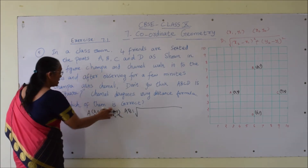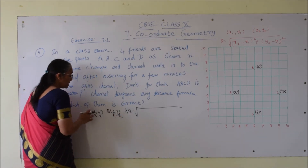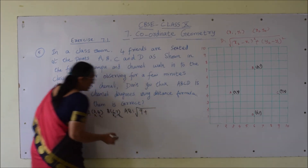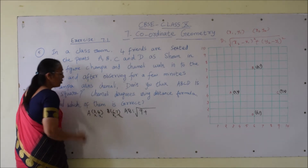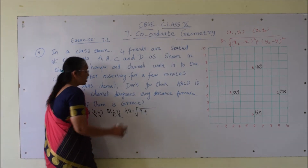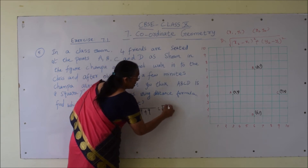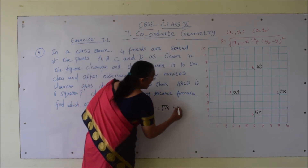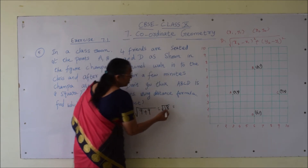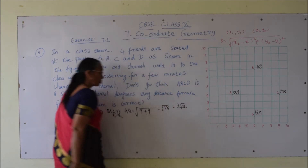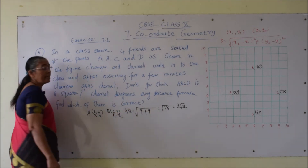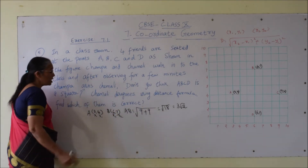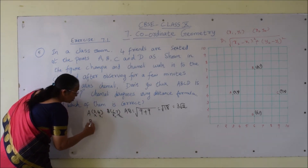Using the distance formula, AB equals root over (6 − 3)² + (7 − 4)², which is root over 3² + 3², that is root over 9 + 9 = √18. We can take 9 common outside the root, giving us 3√2. So distance AB is 3√2.